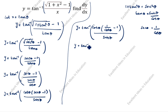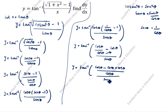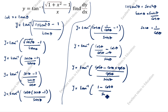Distributing cos theta inside the bracket: cos theta times 1 over cos theta gives 1, and cos theta times 1 gives cos theta. So y is equal to tan inverse of (1 minus cos theta) divided by sin theta.